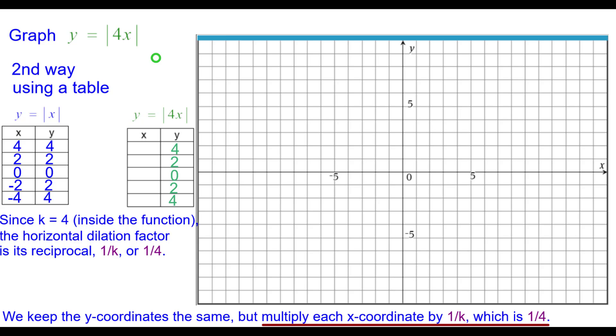However, we are going to multiply each x coordinate by the reciprocal of 4 which is 1 fourth. So 4 times 1 fourth is 1. So we'll plot 1 comma 4. 2 times 1 fourth is 2 fourth which is 1 half comma 2. The origin remains unchanged.